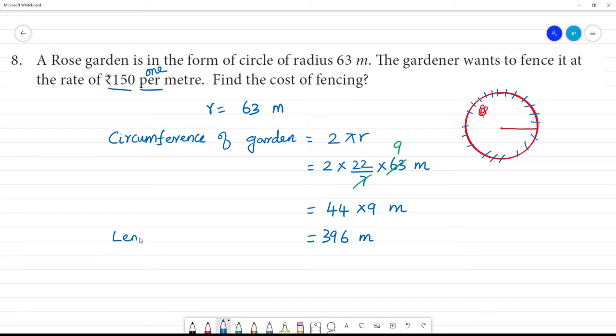That's 2 times 22/7 times 63, which equals 44 times 9. Circumference of the garden equals 396 meters. Now we have the rate - rate for 1 meter equals 150 rupees.